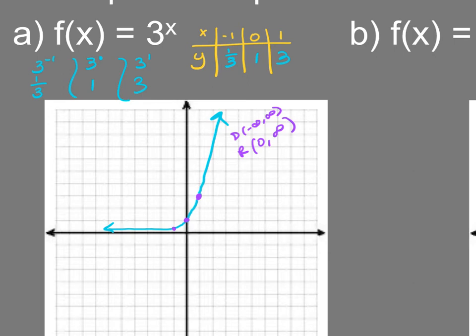Questions on that one? The range starts at zero because there's a horizontal asymptote here. So unless there's a vertical shift, which means you're going to add or subtract something after the number, my horizontal asymptote will always be at zero.